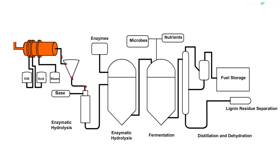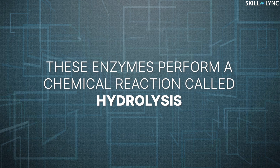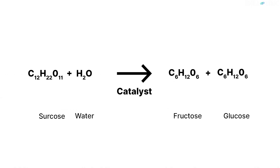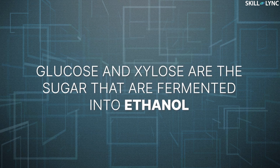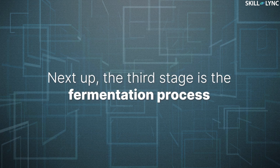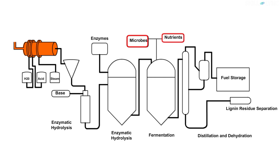In its second stage, before the enzymes are added, they are cooled down and a base is added to balance the acidity, because enzymes can't operate under high acidic conditions. These enzymes perform a chemical reaction called hydrolysis. During this process, the enzymes break cellulose into glucose and hemicellulose into xylose. Glucose and xylose are the sugars that are fermented into ethanol. The third stage is the fermentation process, where microbes such as yeast or bacteria are added to the mixture, which digest the sugar and secrete compounds that can be used as biofuel.